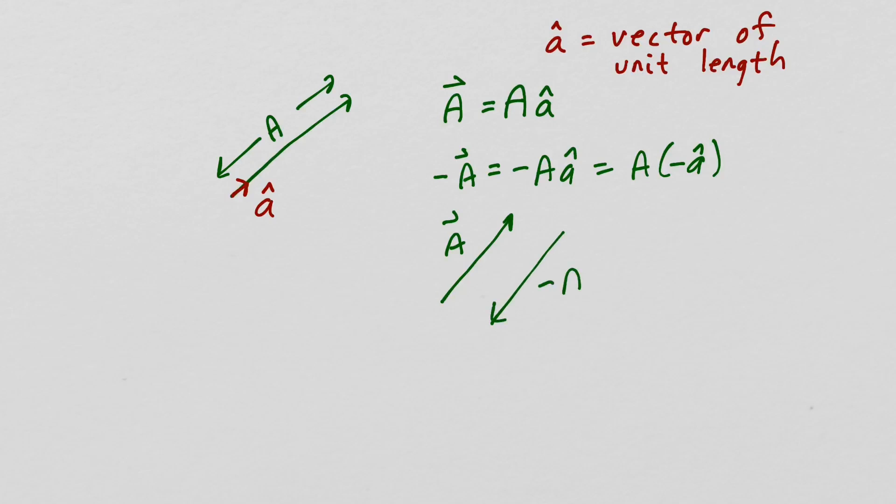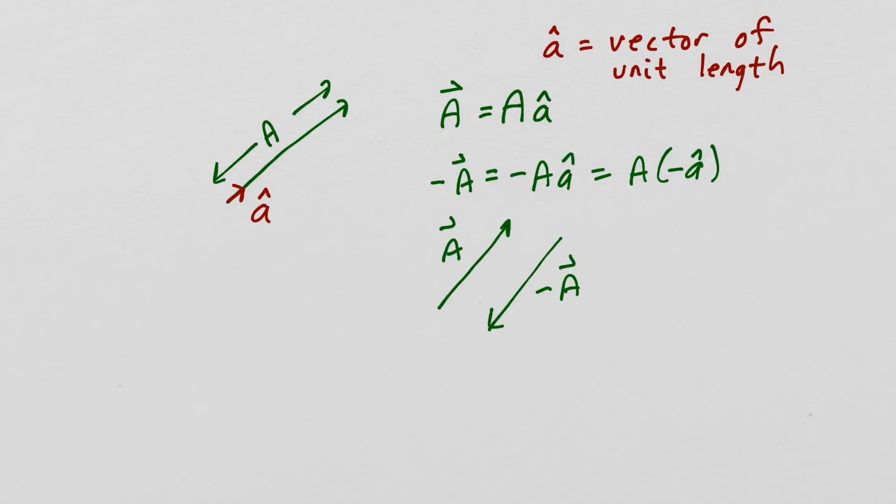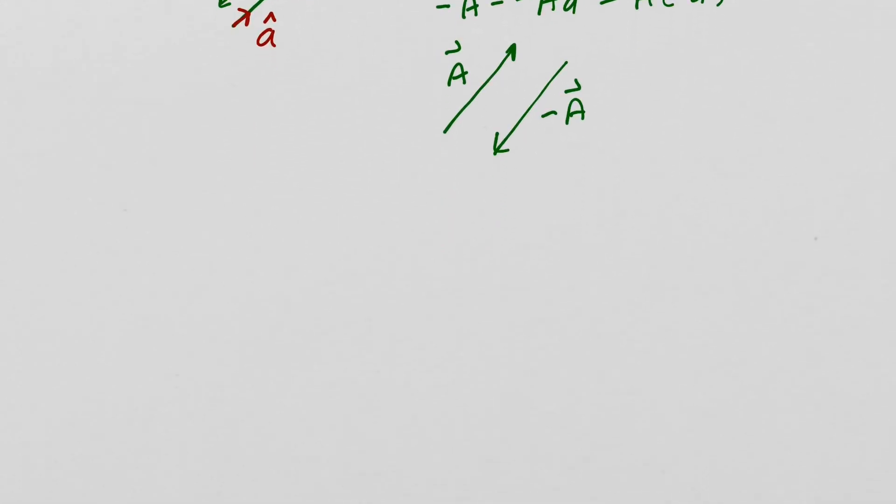If I draw a series of lines like this, it will be signifying a vector field which is pointing to the right. Sometimes I want to represent a vector field coming out of the page, and I will signify that with dots like this. If I want to signify a vector field going into the page, I will do that with X's.